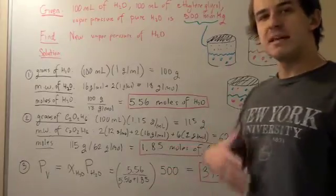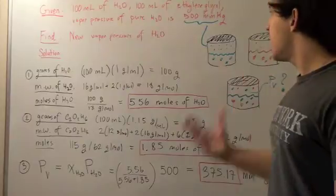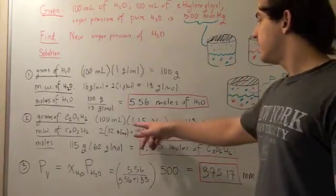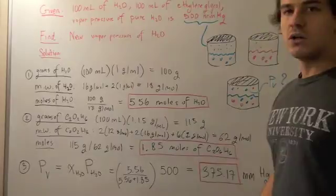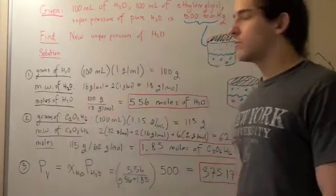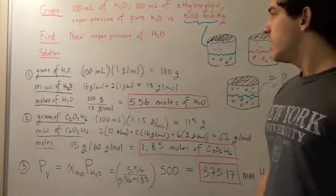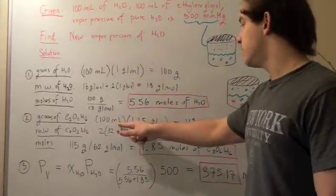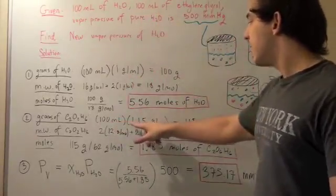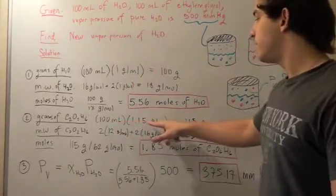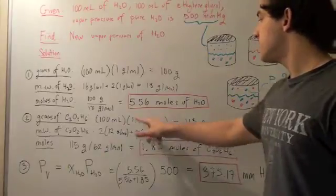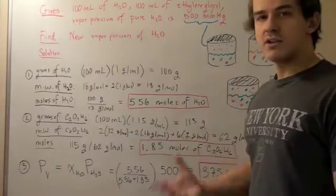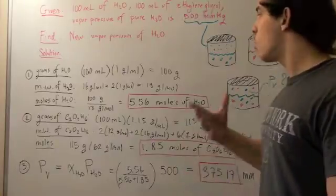The second step follows the same exact process, except for ethylene glycol. We look up the density of ethylene glycol and its molecular formula. We take 100 mL times 1.15 g/mL — the mLs cancel — giving us 115 grams of ethylene glycol, which is a little bit more than water.